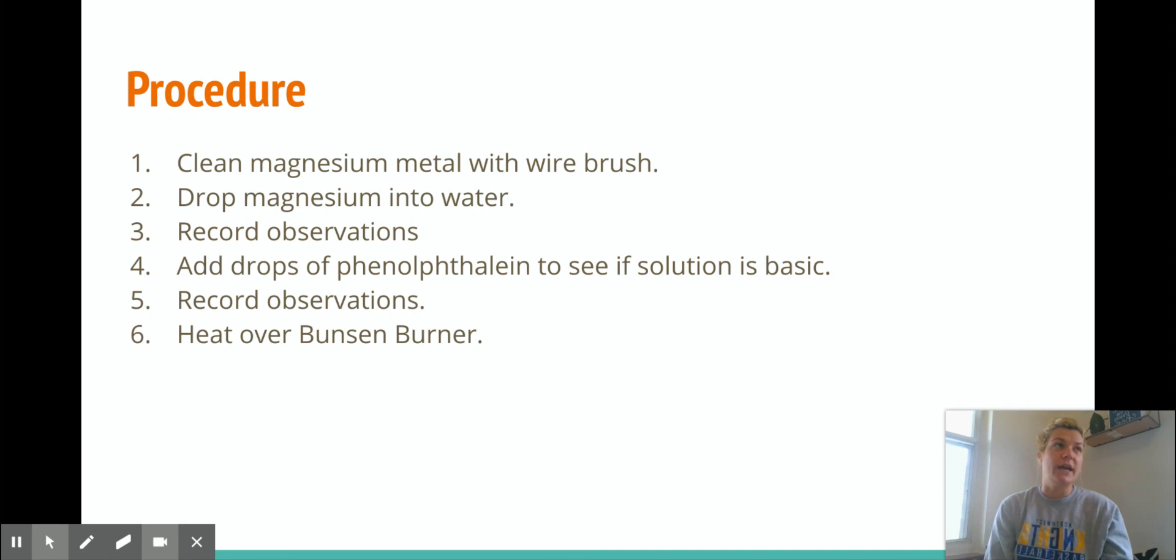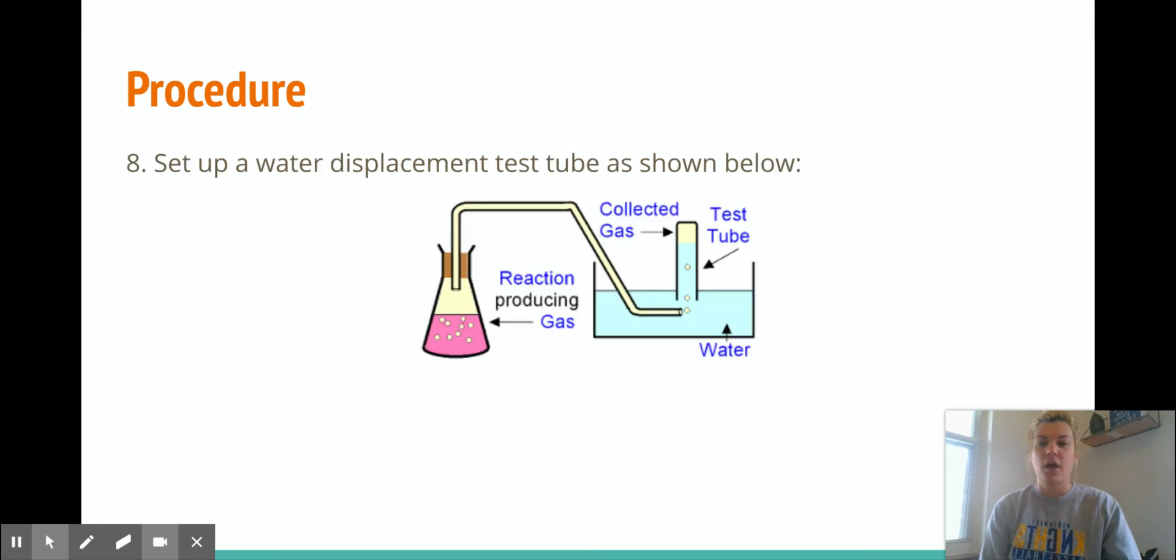And then we're going to see that since this reaction is so slow, we're going to have to heat it over the Bunsen burner to speed it up. And he talks about why that is. It's because we're making the molecules move faster and interact with each other more, and that's why the reaction can go faster once heated. And then we're going to record observations.